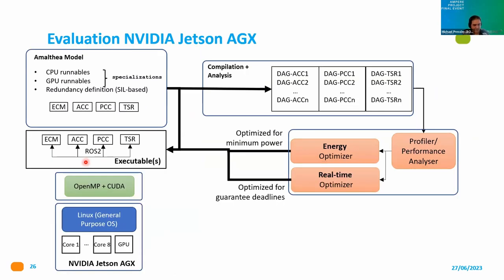We also have an NVIDIA Jetson platform where we deploy the same software model — only the hardware model changes, which nicely demonstrates the model-driven approach in AMPERE with no real software adaptations except timing for different cores. The whole system is deployed on the cores and GPU, all connected via ROS2, using software replication for the ECM to fulfill modeled safety requirements. Two optimizations are performed: one for real-time and one for minimum power consumption while still meeting all system deadlines.